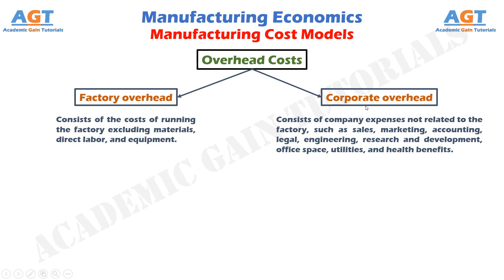Corporate overhead consists of company expenses not related to the factory, such as sales, marketing, accounting, legal, engineering, research and development, office space, utilities, and health benefits. These functions are required in the company, but they are not directly related to the cost of manufacturing. On the other hand, for pricing the product, they must be added in, or else the company will lose money on every product it sells.